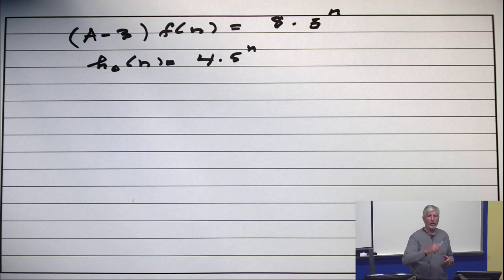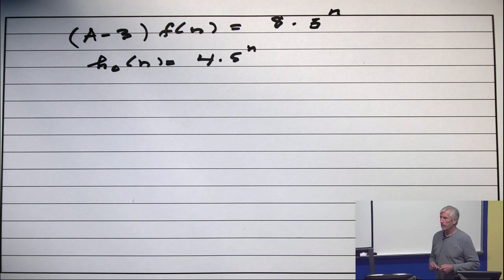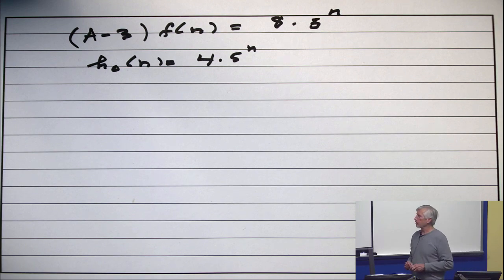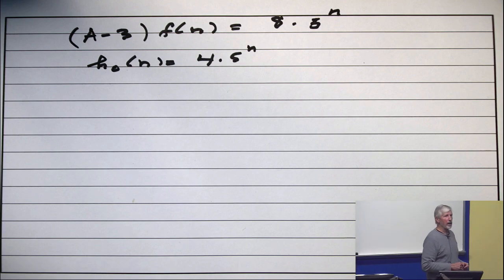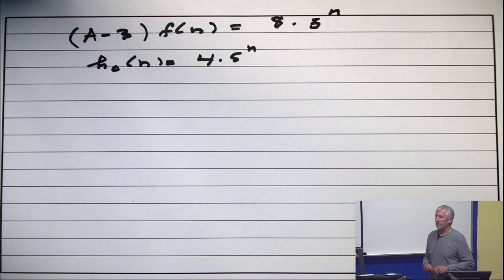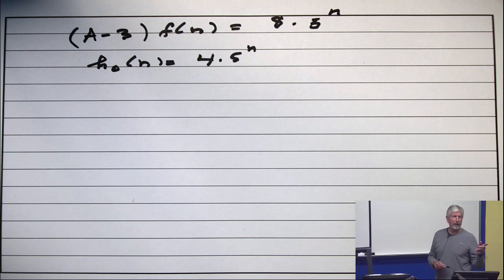Okay, now how do you think I made up that slide? Do you think I actually solved that? Selectively lazy. I wrote the particular solution 4(5)^n, substituted it into (A - 3)F(n), and found that the answer was 8(5)^n, and then I put that down.